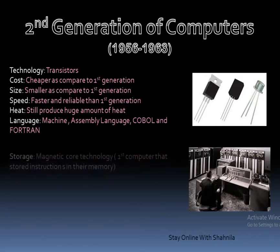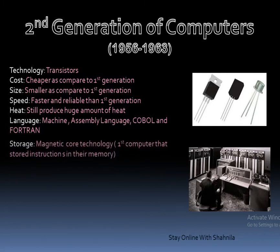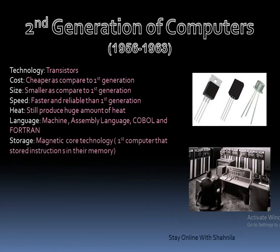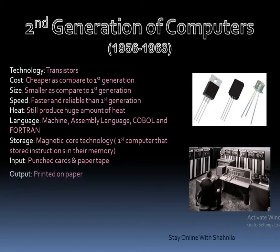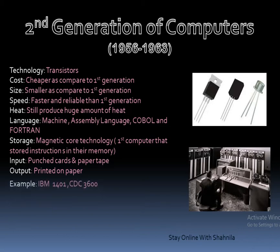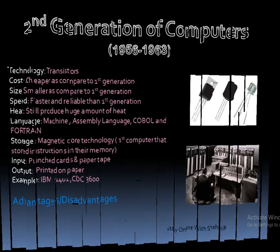The problem of heat was still not fully solved in second generation computers. For programming, machine language, assembly language, and a few high-level languages like COBOL and FORTRAN were used. For storage, magnetic core technology was used, and punch cards and paper tapes were used for input, similar to first generation. Output was also taken on paper.